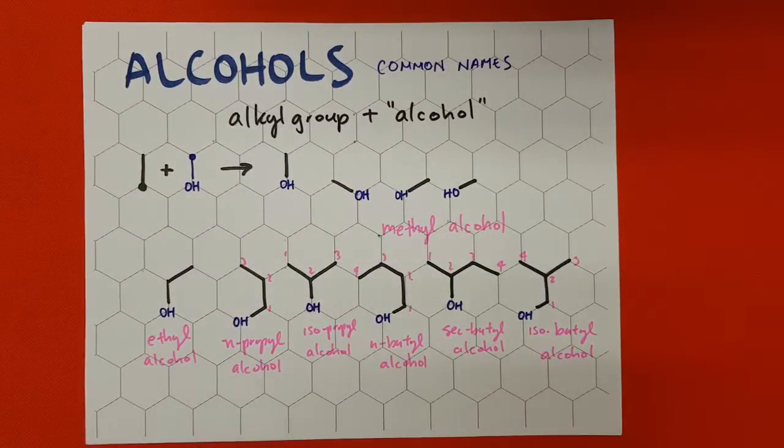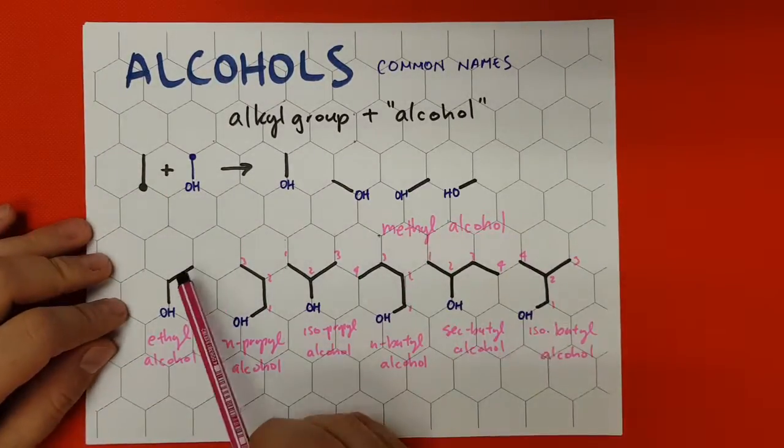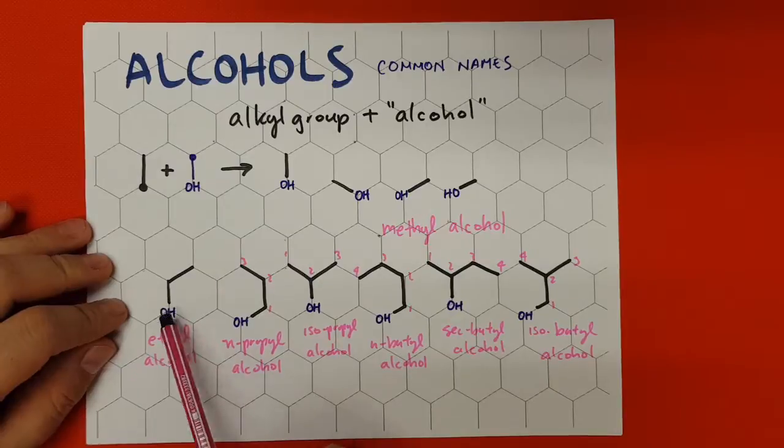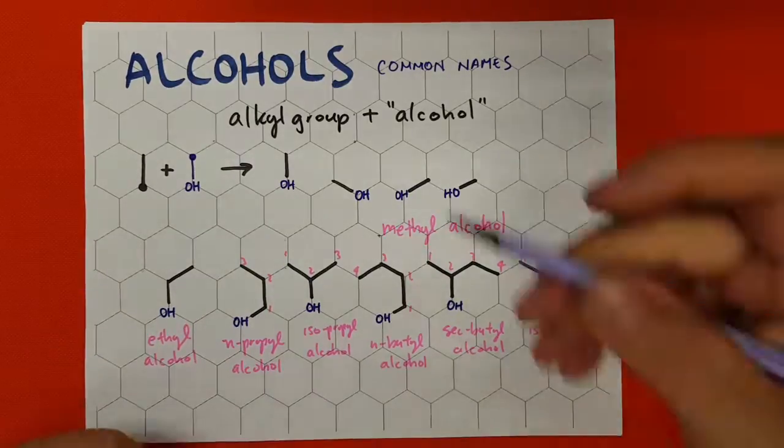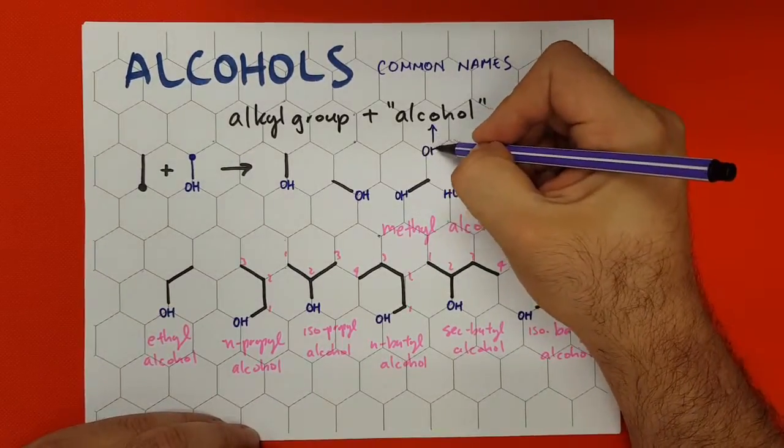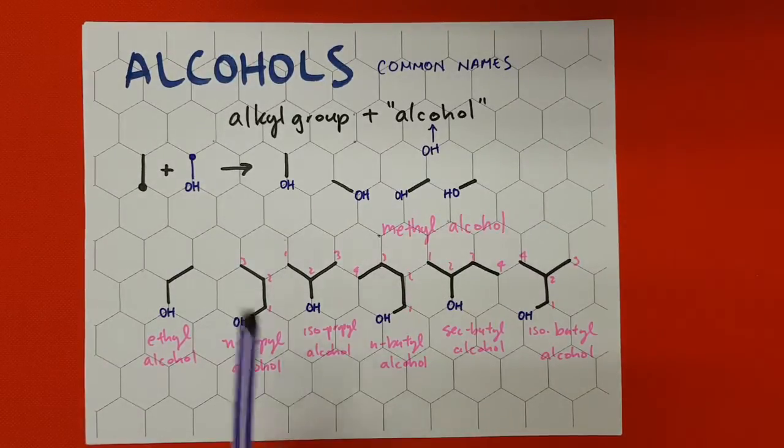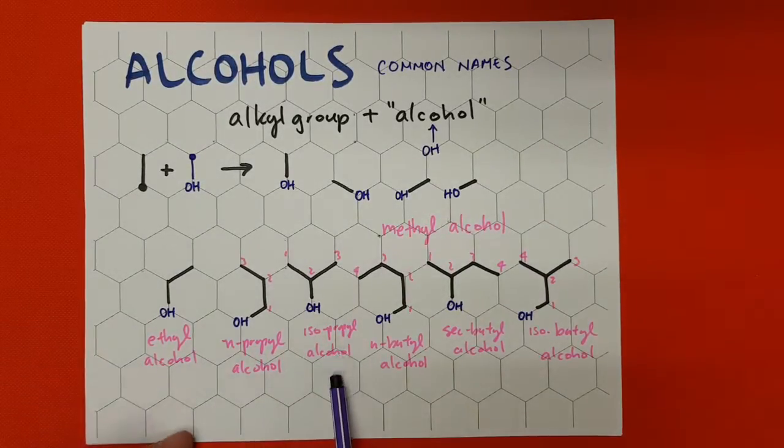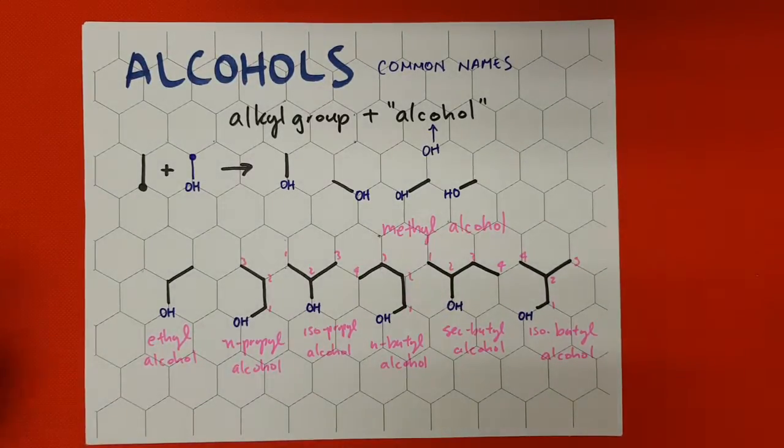So as you can see it's very simple. We analyze the molecule, we see the alkyl group attached, the OH turns into the word alcohol, and the rest is the alkyl group: ethyl alcohol, isopropyl alcohol, methyl alcohol. And it's that simple.